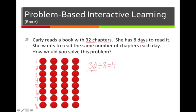Now 32 is the dividend. And 8 is the number that is doing the dividing, so that is the divisor. And 4 is the quotient, and that is the answer to the division problem. The number of chapters Carly will have to read each night.